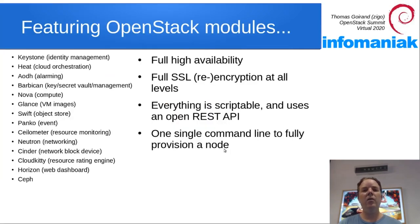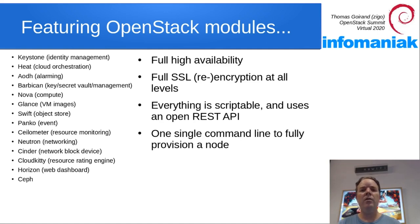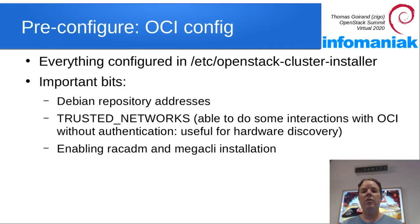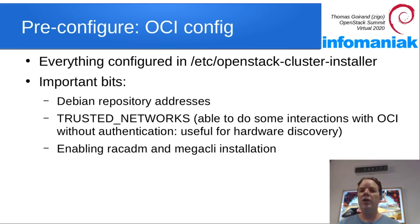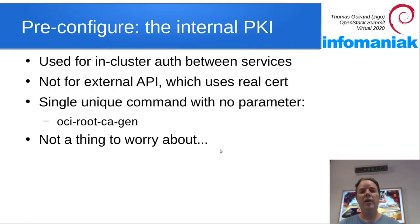OCI can deploy many OpenStack services in a fully available fashion using SSL, including SSL re-encryption within the cluster itself. Everything is scriptable and uses a REST API to send commands to OCI. Configuration of OCI is made through a simple .ini configuration file. There are a few important bits to address, like the Debian repository addresses, which are your trusted networks that may do hardware reporting, and a few things you may want to enable depending on your hardware, like RackADM or MegaCLI. Before you start deploying, you need to run the script from OCI that generates its own CA so that you can do SSL re-encryption.